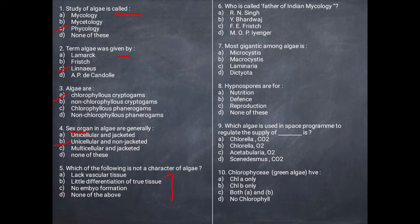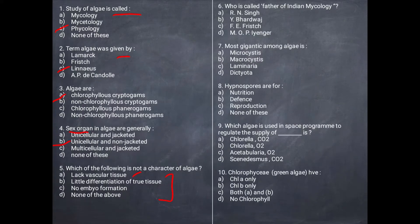Next question: Which of the following is not a character of algae? Algae have no vascular tissue — that's correct. Little differentiation of true tissue, no root, stem, or leaf differentiation — also correct. They also have embryo formation — so the answer is D, none of the above.